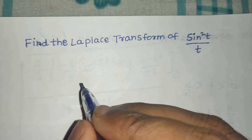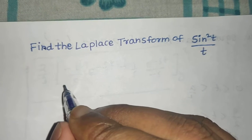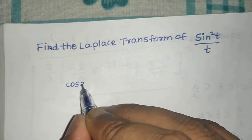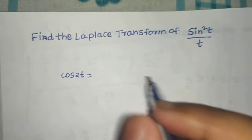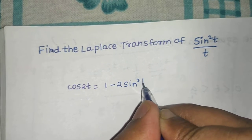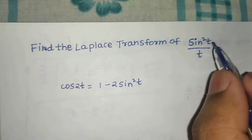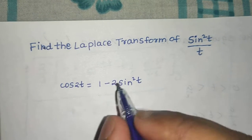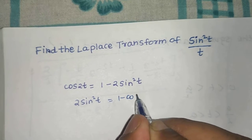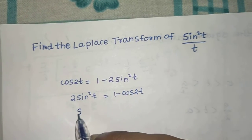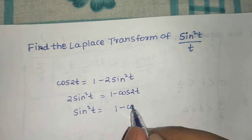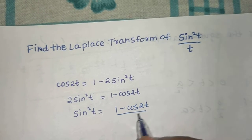We know from basic trigonometry that the formula for cos 2t is 1 minus 2 sine squared t. We are concerned about sine squared t, so 2 sine squared t equals 1 minus cos 2t. From here we can write sine squared t as (1 minus cos 2t) divided by 2.